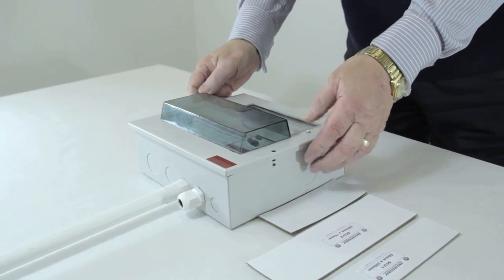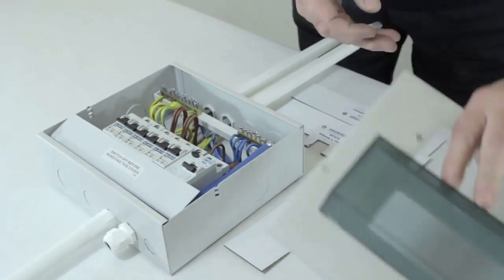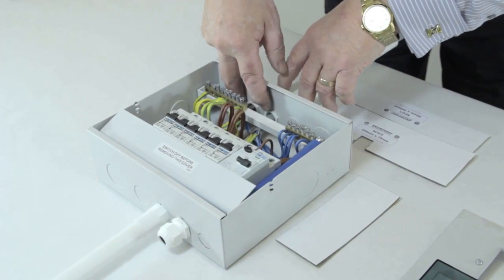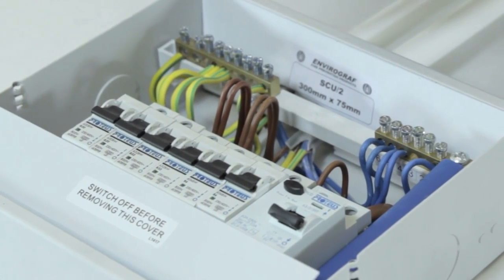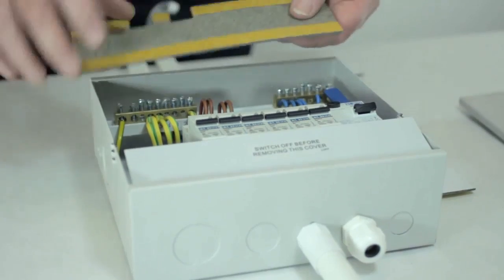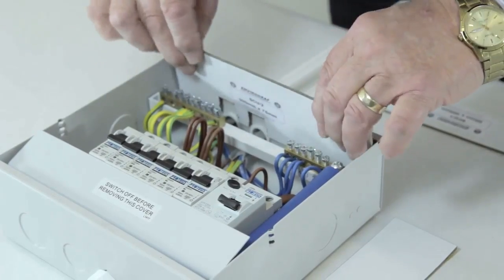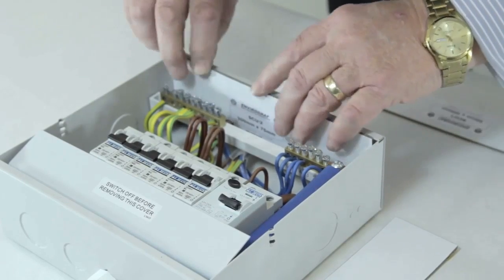The new regulations state metal consumer units are used for newly built domestic residences. Although the metal consumer unit will not ignite, the plastic cables and conduits can. Because of this, we have developed a gasket that can be installed inside the top, bottom and back of new boxes. This prevents the fire from spreading outside of the unit.